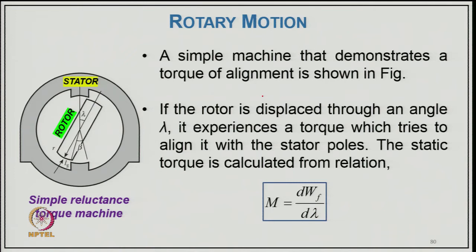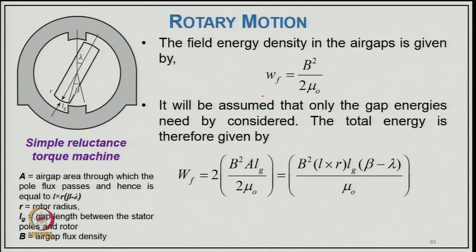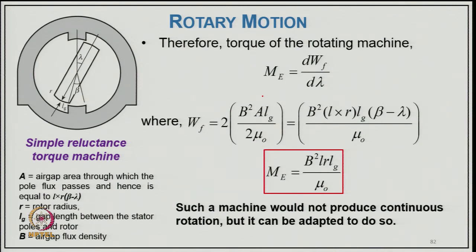A simple rotary motion example defines λ with a two-pole construction of stator and rotor. A simple machine demonstrating torque of alignment is shown: if the rotor is displaced through angular angle λ, it experiences a torque tending to align it with the stator poles. The static torque is M = dW_f/dλ. The field energy density in the air gap is W_f = B²/(2μ₀). Assuming only the gap energy needs to be considered, total energy is W_f = 2·B²·A·l_g/(2μ₀) = B²·l·r·l_g·(β − λ)/μ₀. Such a machine would not produce continuous rotation, but it can be adapted to do so.